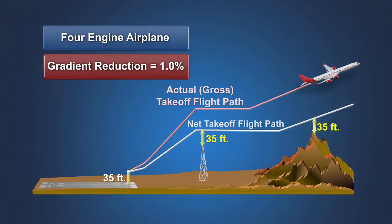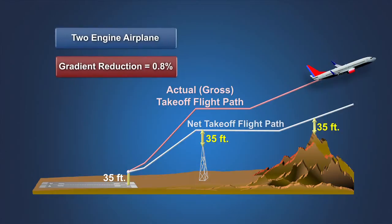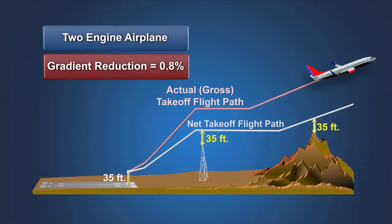For four-engine airplanes, the net takeoff flight path is defined by reducing the gross climb path by 1%, retaining the original 1% obstacle clearance margin required for the Boeing 707. For the level acceleration and flap retraction segment, the 1% regulatory gradient reduction is converted to an equivalent reduction in acceleration, resulting in a net third segment that is longer than the gross third segment distance. For three-engine jet airplanes, the regulatory gradient and acceleration reduction defining the net takeoff flight path is 0.9%. For two-engine jet airplanes, the regulatory gradient and acceleration reduction is 0.8%.